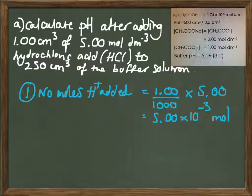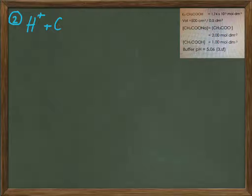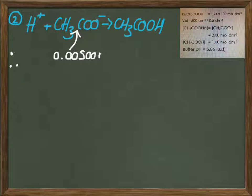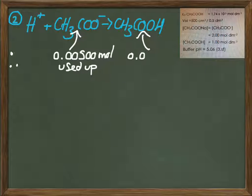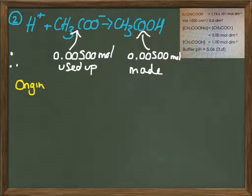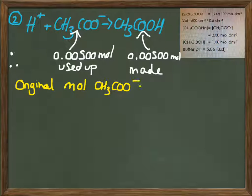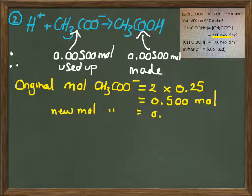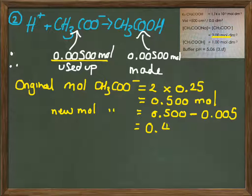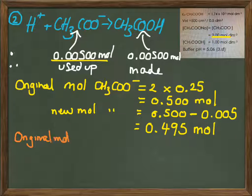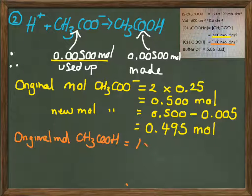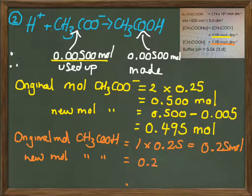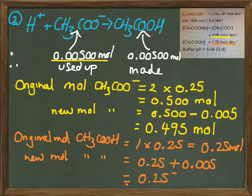What are these protons going to do? They're going to collide with the ethanoate ion, CH3COO minus. When they join together, they will form the ethanoic acid molecule. So we're going to use up some of our ethanoate ions. We can work out our original moles of ethanoate ion in our 250 centimetres cubed by multiplying 0.25, the volume, by 2, the concentration. So we've got 0.500 moles of ethanoate ions. Then we take off the moles that reacted with the protons, leaving us new moles of ethanoate ions of 0.495.